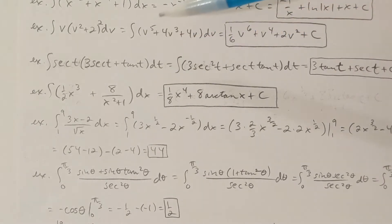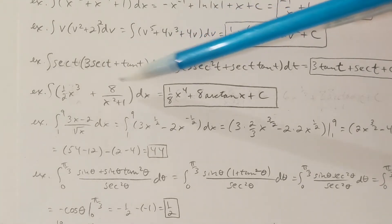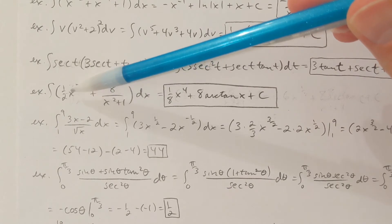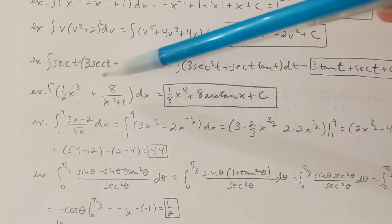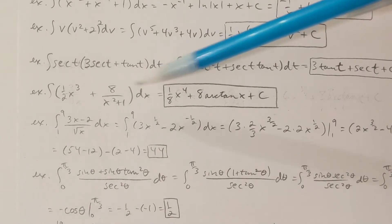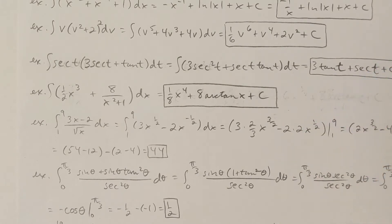Now in some of these you can go right to the answer; in some of them there's algebra needed before you take the antiderivative. Here's one where we can go right to the answer. The antiderivative of x cubed would be x to the 4th over 4; one half times one fourth is one eighth, so it's one eighth x to the 4th. Plus 8 is a constant that can come out of the antiderivative. The antiderivative of 1 over x squared plus 1 is tangent inverse of x, or arctan x — same thing. Plus a constant at the end. Obviously we have to know our derivatives, so if you're still rusty with derivatives, it's a good idea to continue to practice.